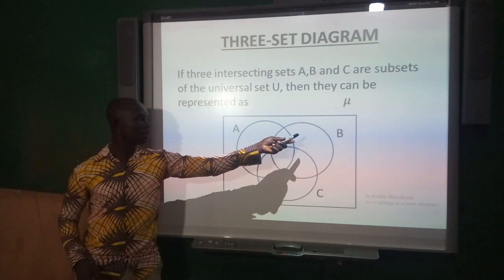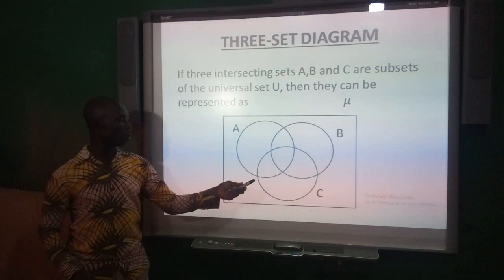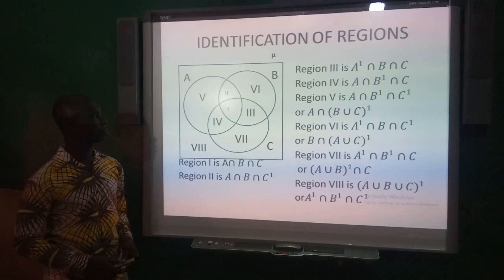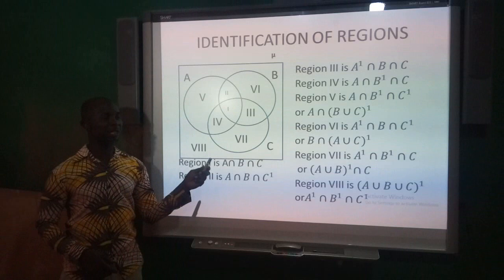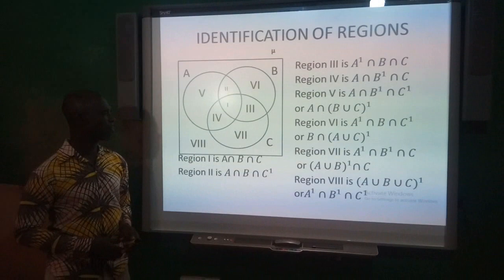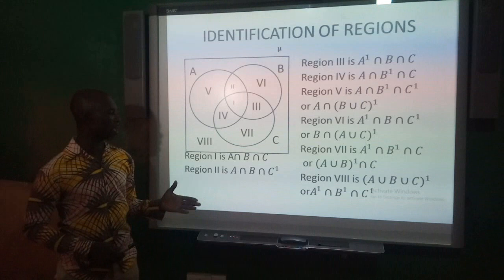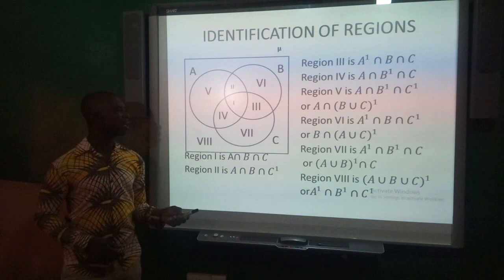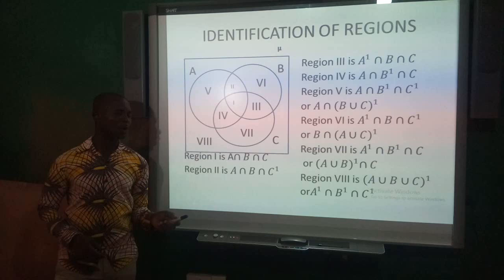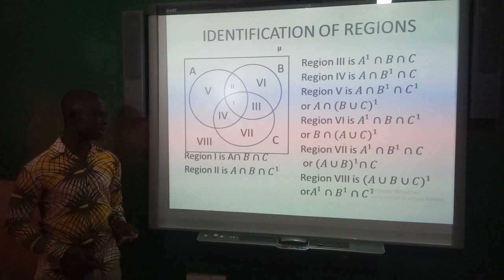You can see A being one set, B being another set, and C also being another set. They all intersect at this point. If we number the various regions from I to VIII, region I is the middle one — the intersection of A, B and C. Region II is the intersection of A, B, and C complement.